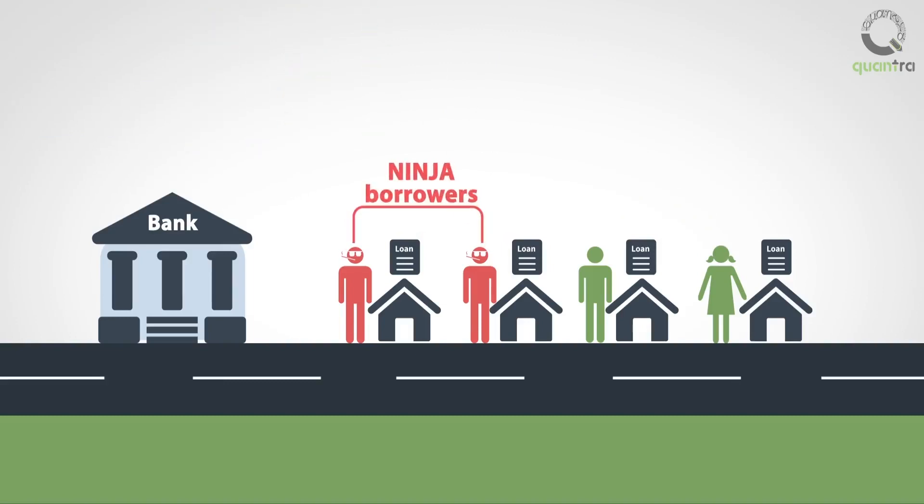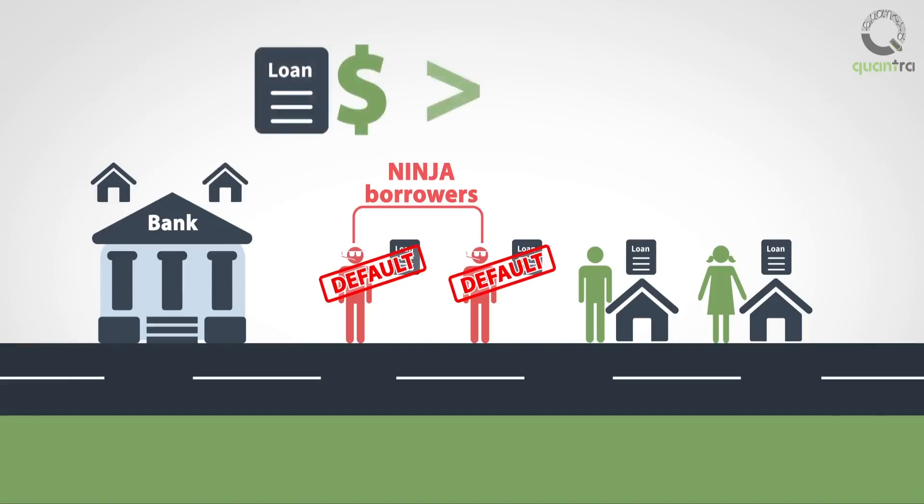When these NINJA borrowers started to default on their loans, the buyers failed to keep up with the pace, resulting in a sudden crash of prices. As a result, the value of loans increased in comparison to the value of the underlying property, leading to depreciation of assets across the real estate market.